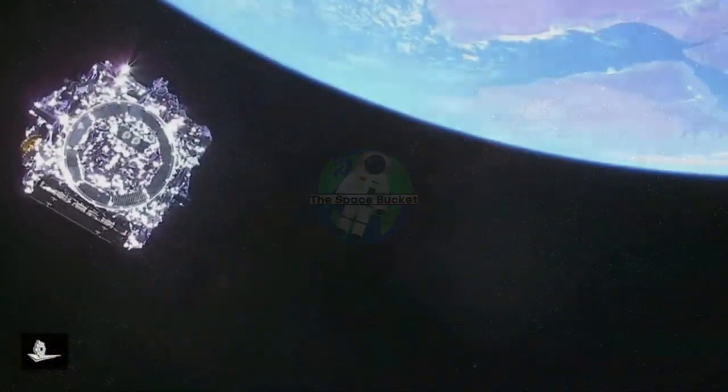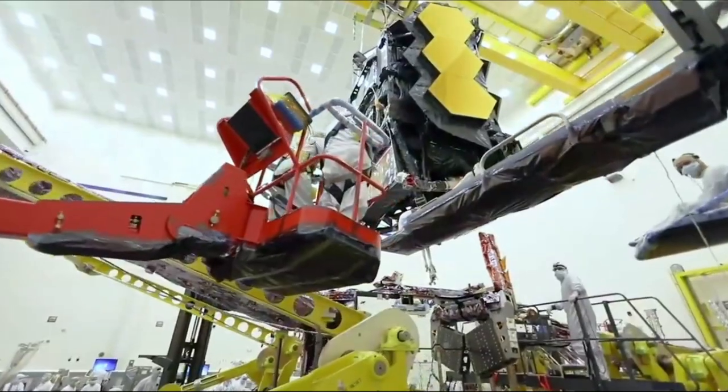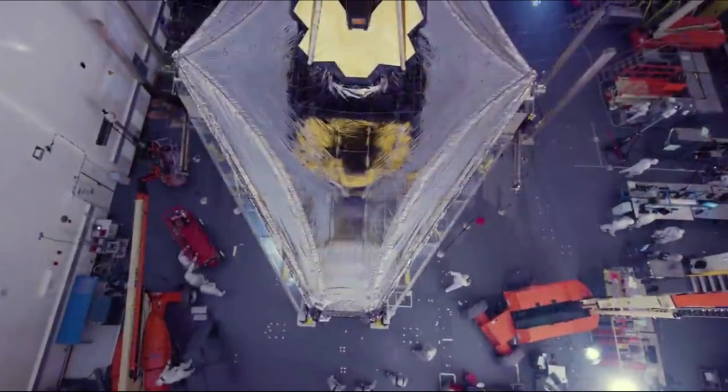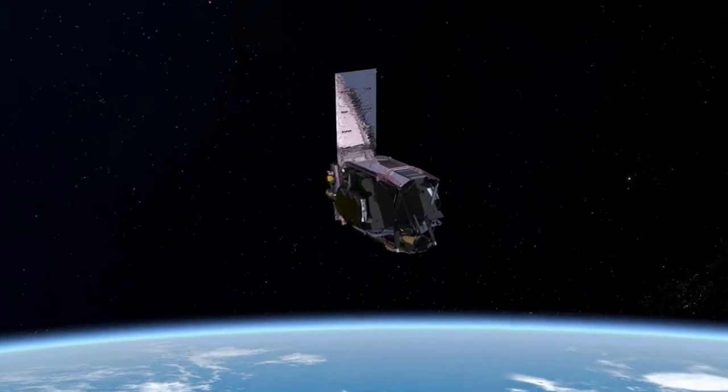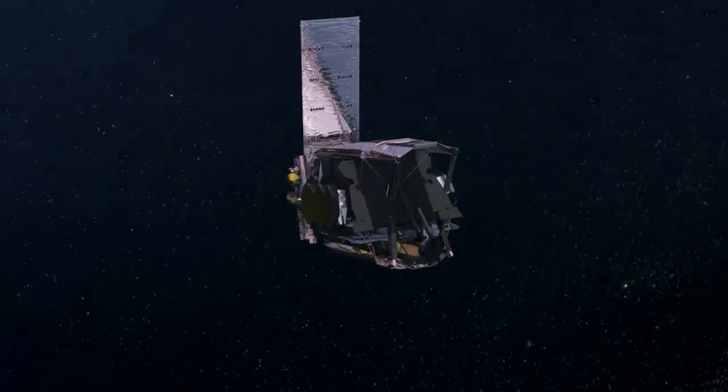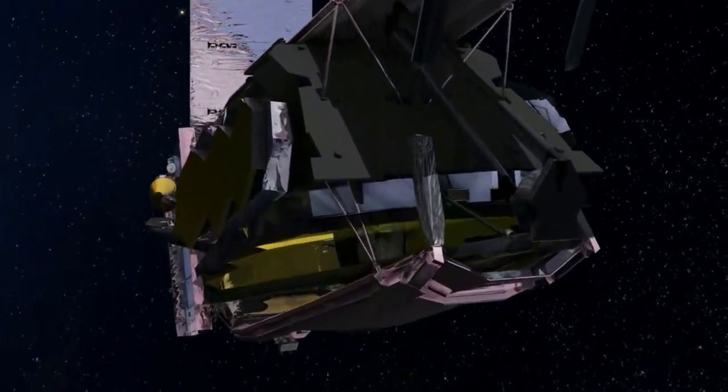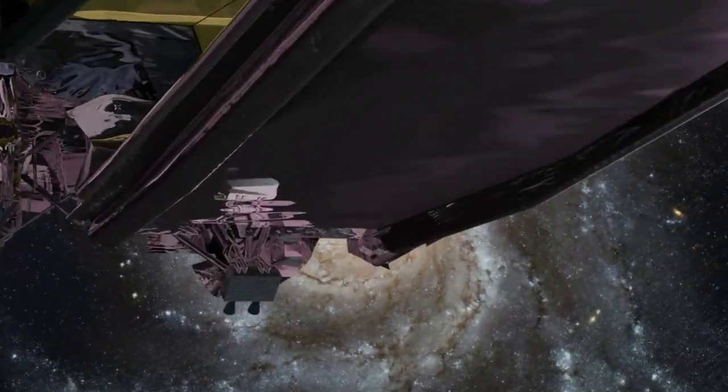Hello everyone, today we are taking a look at more Webb progress as it nears consistent science operations. Since the James Webb Space Telescope was launched in late December of last year, it has stayed very busy in many different ways. From initial deployments, alignment milestones, and now final preparations, the journey has been packed full. This being said, now in early July, NASA and other agencies are getting excited as Webb is closer than ever to consistent science operations.